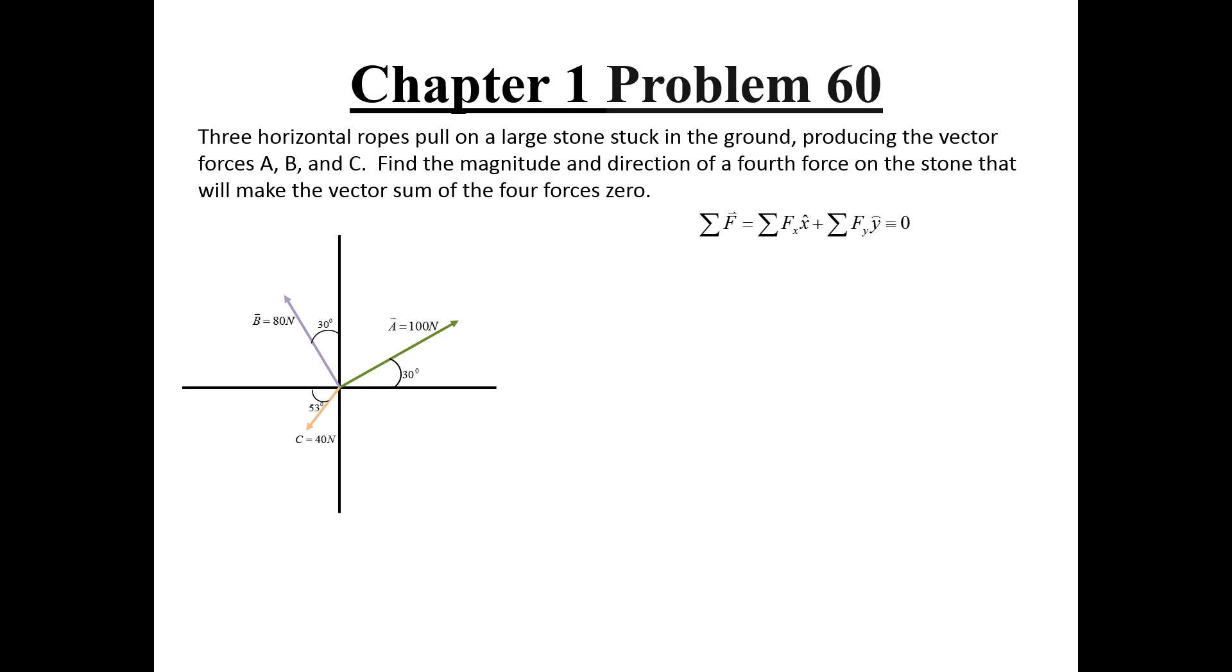We want the summation of forces on the rock to be equal to zero. To do this, we need to set the sum of the forces in the x direction equal to zero, and the summation of forces in the y direction also equal to zero. First we need to split up the three forces we do have into x and y components in order to add the vectors together.